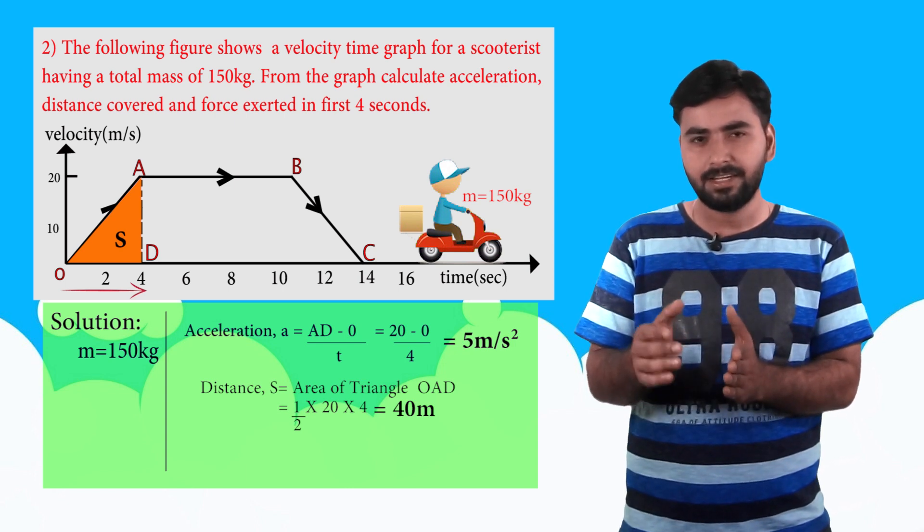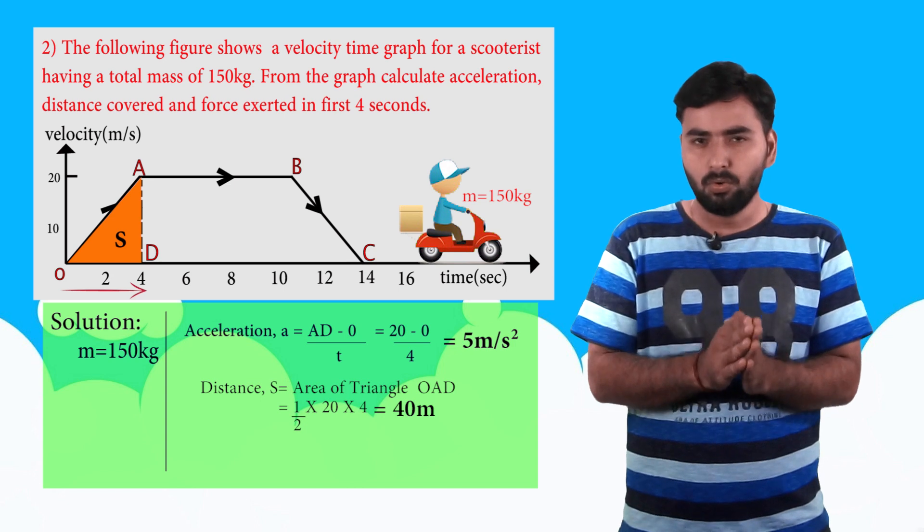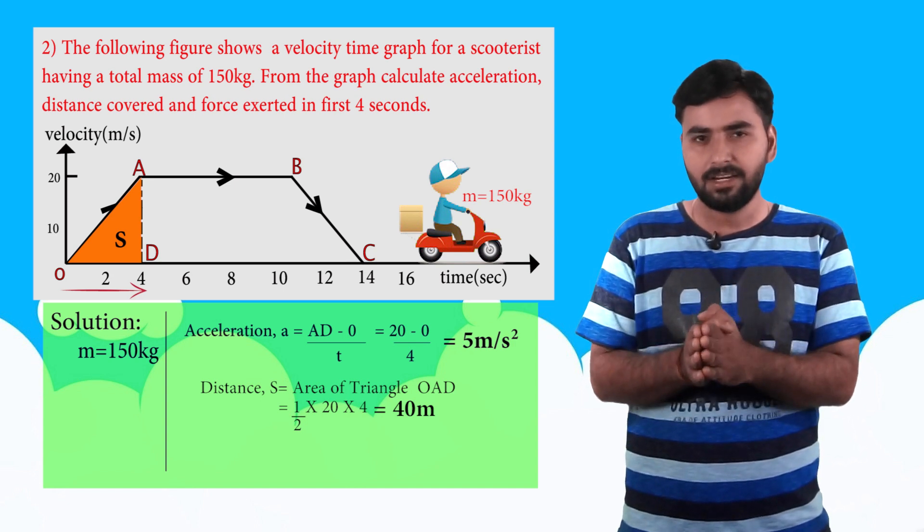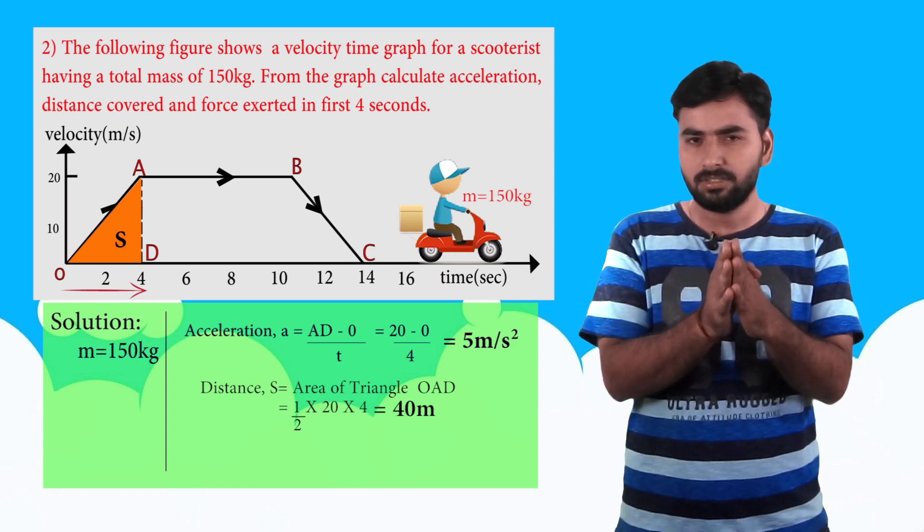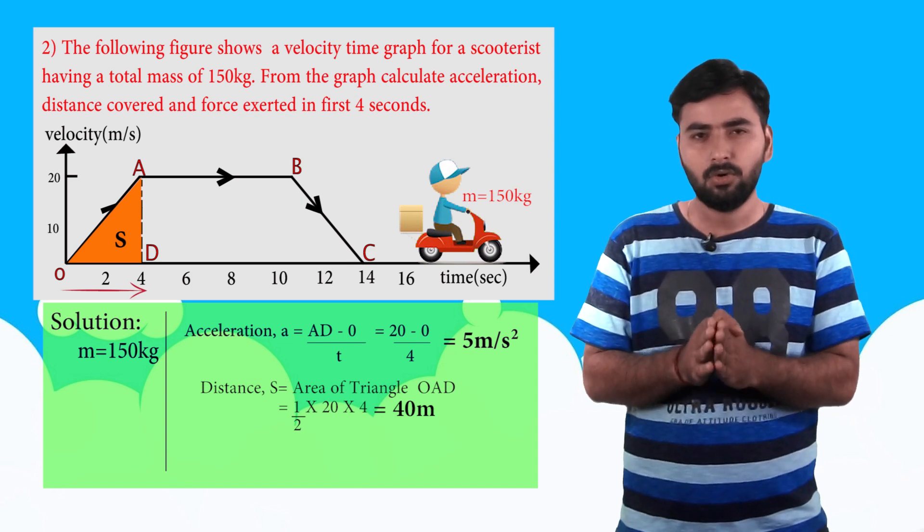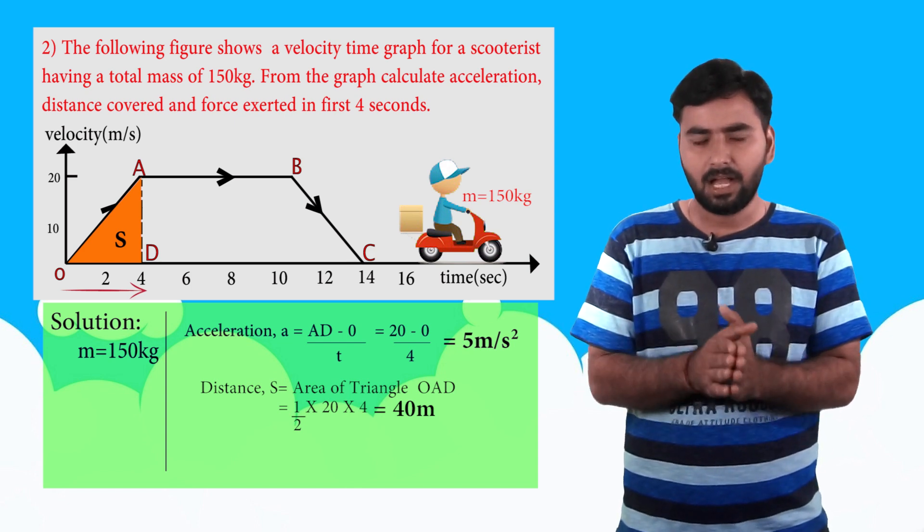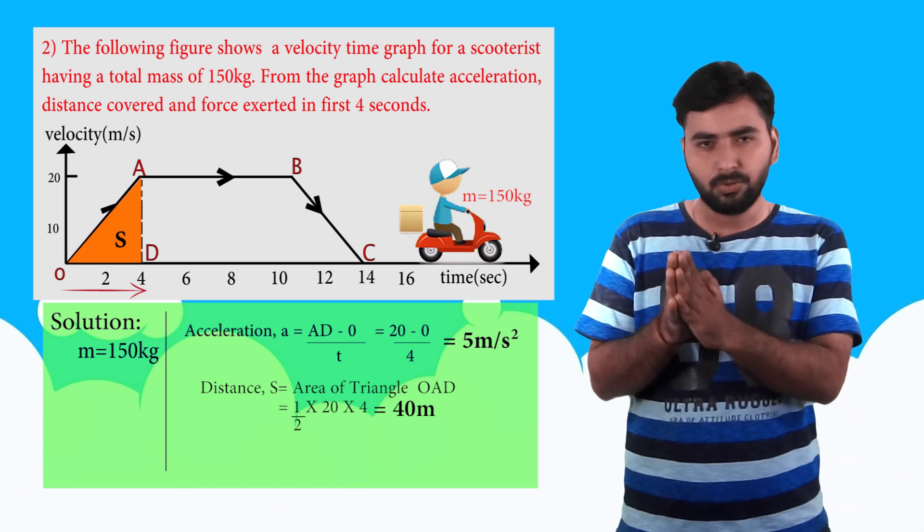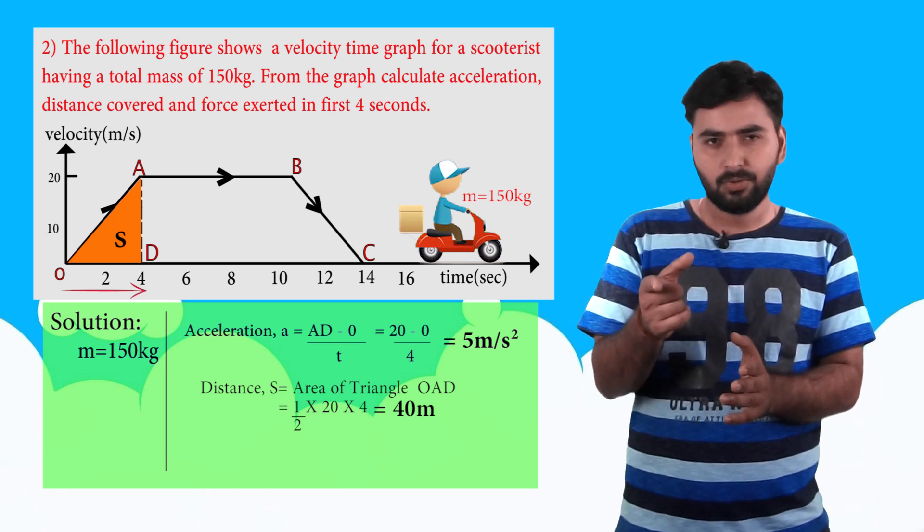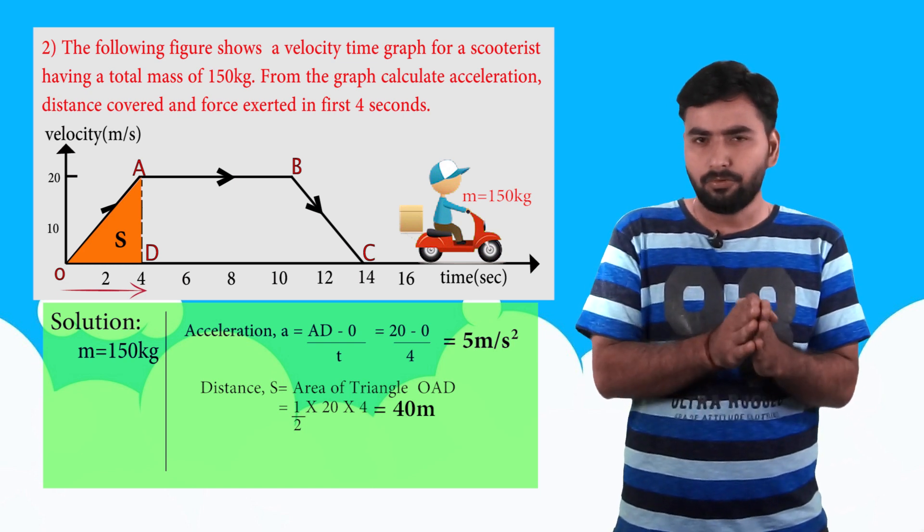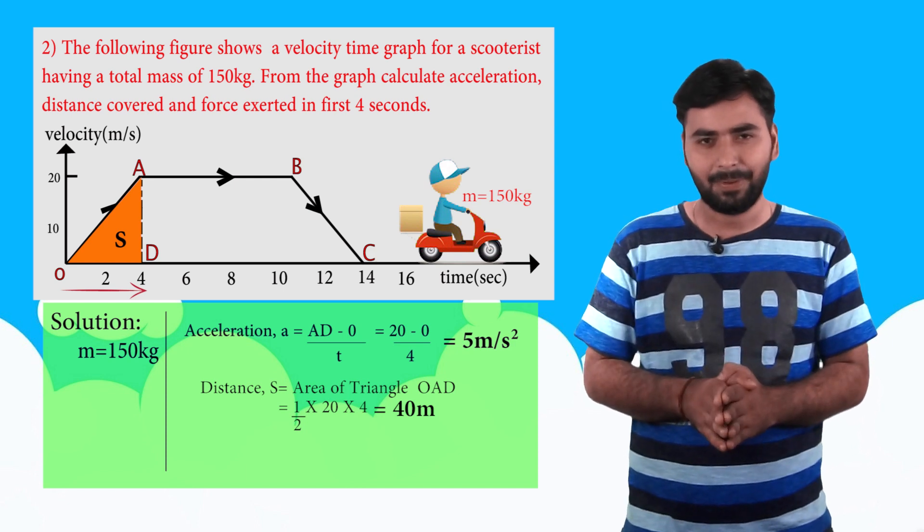So which triangle is forming here? O, A, D. And we need to find the area of this triangle. That gives you the displacement or distance value. So that triangle is half into base into height, that is half into 20 into 4, which is 10 into 4, and that is 40 meter is the distance covered.